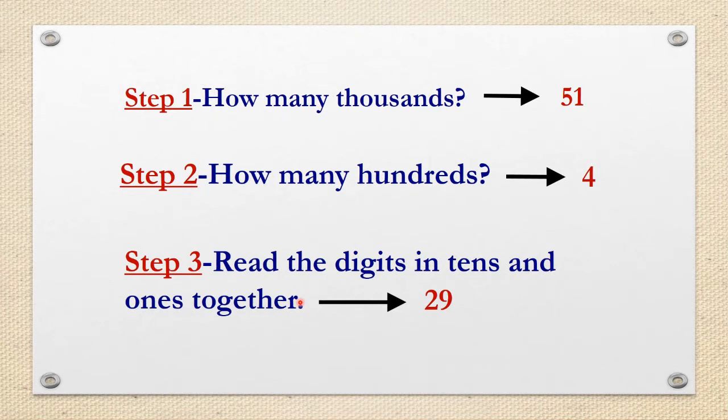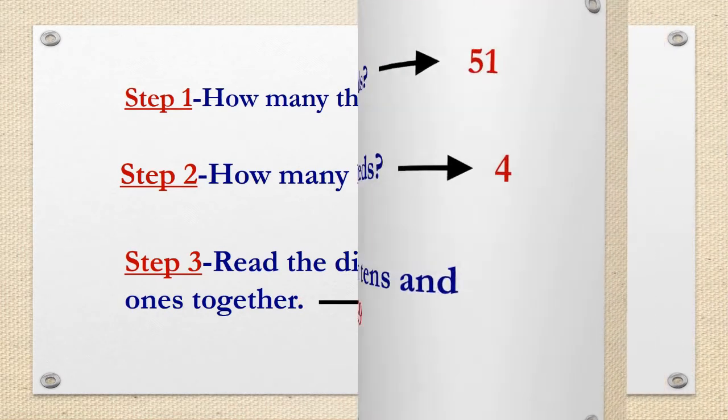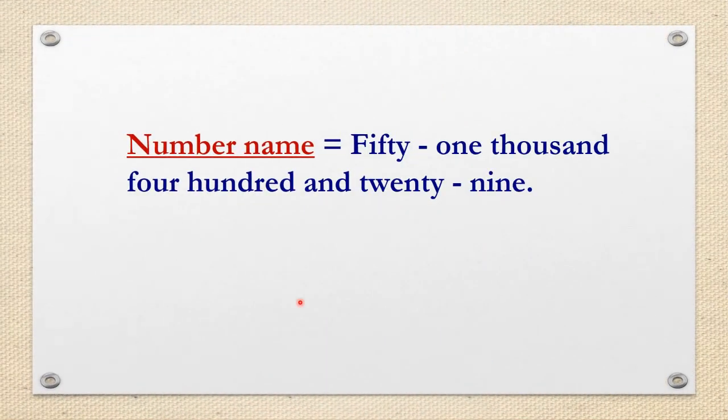There are fifty-one. Step 1: We always read the digits in thousands period together. Step 2: How many hundreds? There are four. Step 3: Read the digits in tens and ones together, that is twenty-nine. So students, we read it as fifty-one thousand four hundred and twenty-nine.